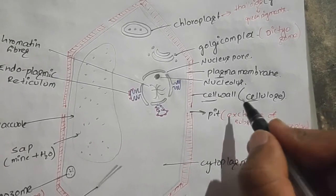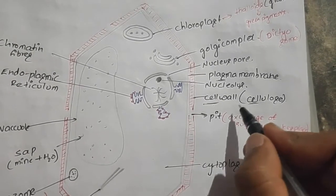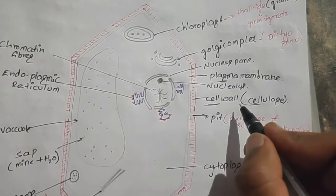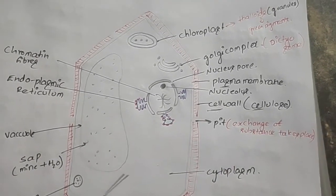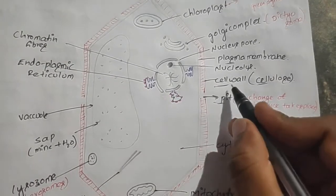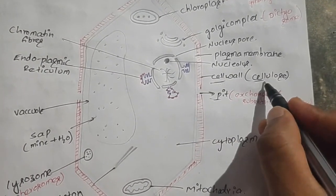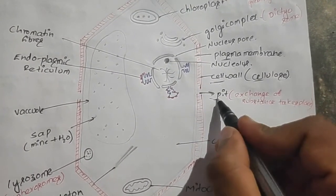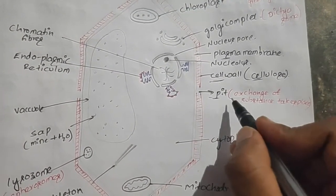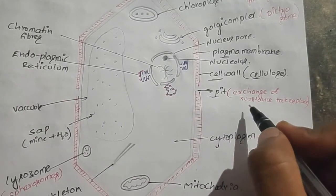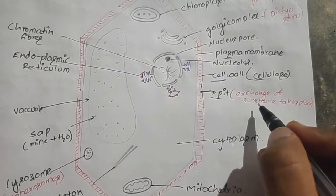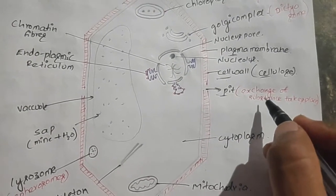This cell wall is absent in animal cells. In some places of the cell wall, the cellulose is absent, known as the pit. Through this pit, the exchange of substances takes place between the cells.